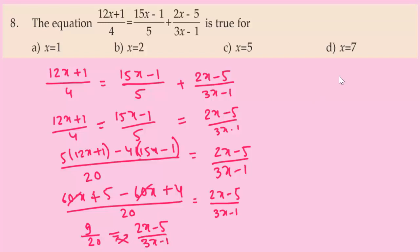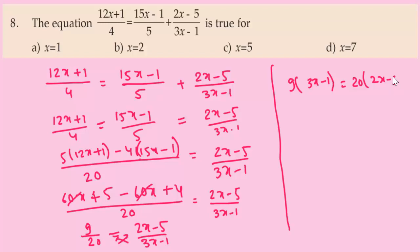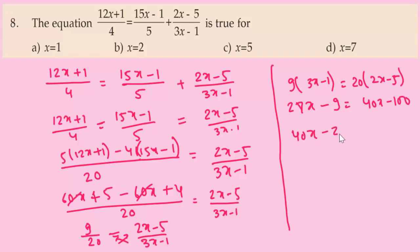Cross multiplying: 9(3X-1) equals 20(2X-5), giving 27X minus 9 equals 40X minus 100. Rearranging: 40X minus 27X equals 100 minus 9, so 13X equals 91.